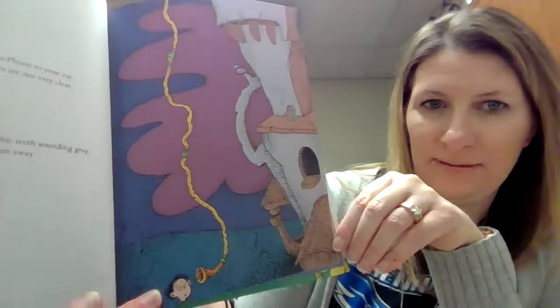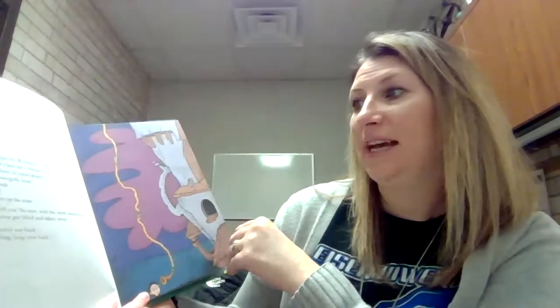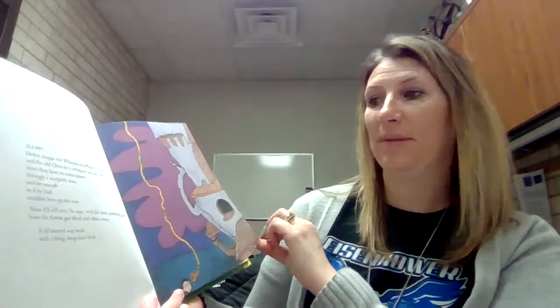Slupp! Down slupps the whisper-ma-phone to your ear, and the old once-ler's whispers are not very clear, since they have to come down through a snergelly hose, and he sounds as if he had smallish bees up his nose. Give you a good glimpse there. Now I'll tell you, he says with his teeth sounding gray, how the Lorax got lifted and taken away. It all started way back, such a long, long time back. Way back in the days when the grass was still green and the pond was still wet, and the clouds were still clean, and the song of swomee swans rang out in space. One morning I came to this glorious place.